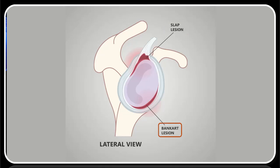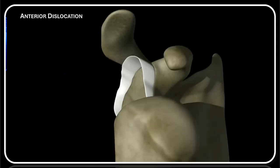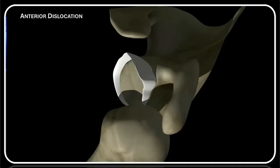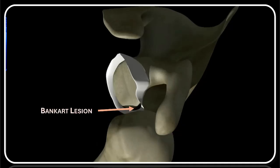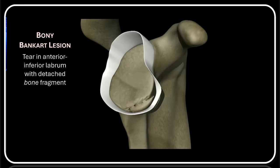Using this image we move to another common shoulder problem: the Bankart lesion, located at the anterior inferior rim of the glenoid. In this shoulder representation we see the humerus, scapula, and the white labrum. The humerus has moved out of the socket into the position of an anterior shoulder dislocation. From a top-down view, the humerus is moved to the position of anterior dislocation, which can cause a tear in the labrum — called a Bankart lesion. From the lateral view, you can see the labral tear away from the glenoid cavity. If a piece of bone comes off the glenoid surface with the labral tear, it is called a bony Bankart.